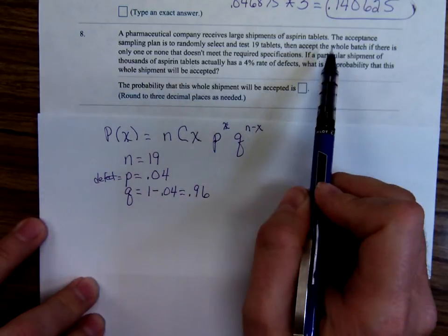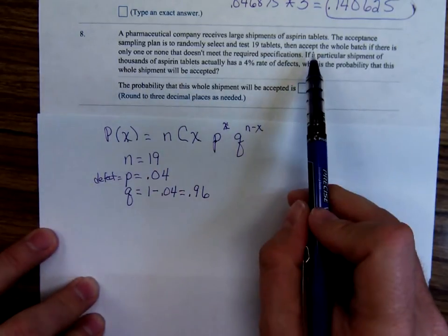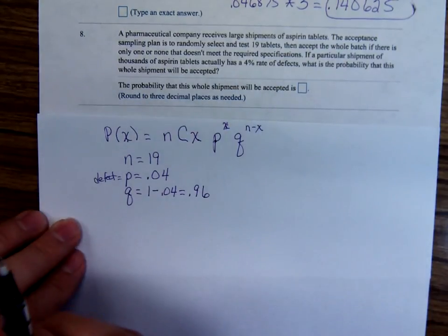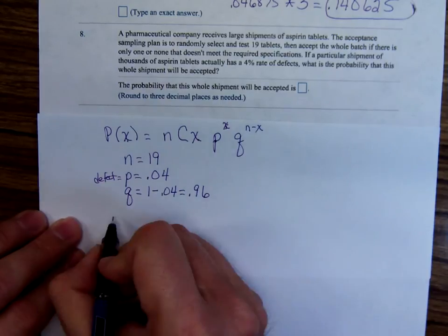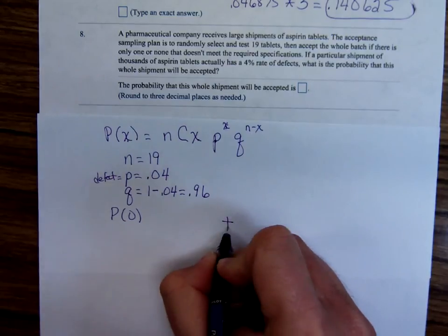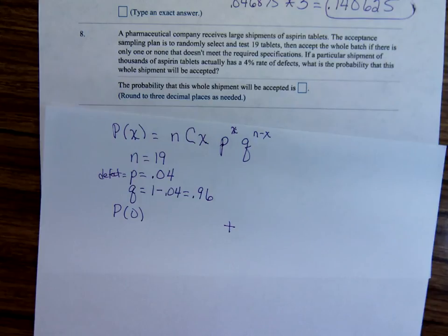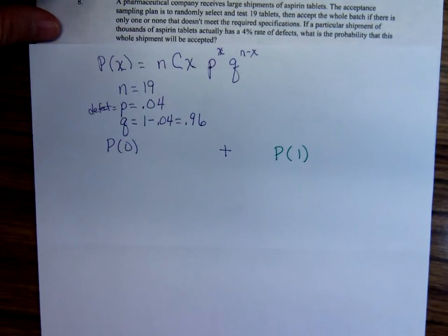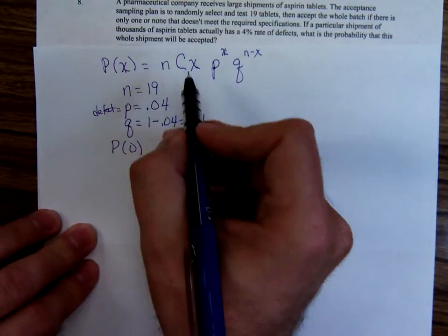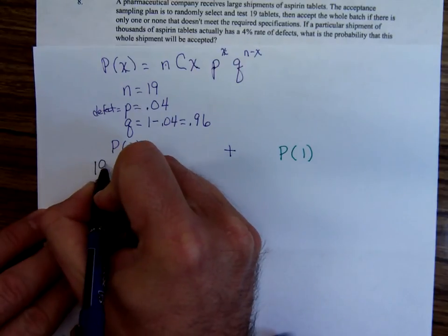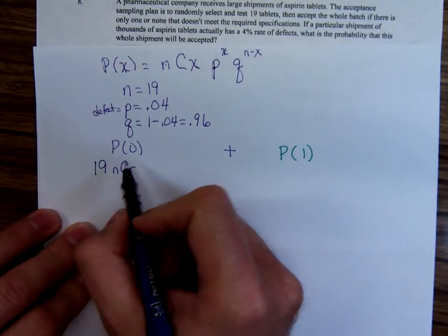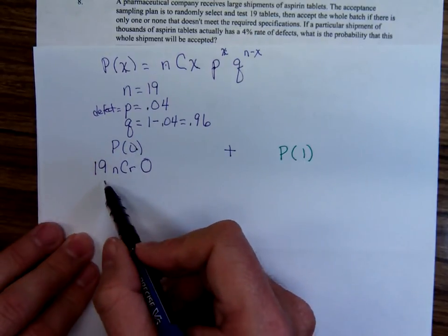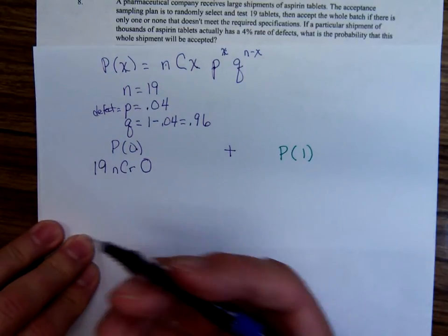We want them, they're going to reject the shipment if they get more than one defect. Accept the whole batch if there's only one or none. So they're going to accept the shipment if there's zero defects or one defect. So let's find the probability of zero defects, and then we'll add that to the probability of just one defect. One of the 19 aspirin being defective. Okay, so NCX, that would be the number of ways you could choose 0 of the 19 items. Well, that's pretty easy. You can do that in your head. If you have 19 aspirin, how many ways could you choose 0 of them? Well, there's only one way. You just choose none of them.